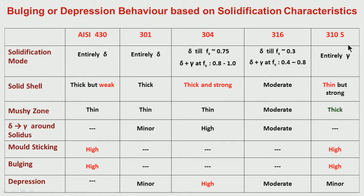For very high nickel equivalent by chromium equivalent, similar to the behavior of very high carbon above 0.5 percent carbon equivalent, solidification is entirely through gamma. Microsegregation is very high, the shell thickness during solidification is quite thin, and the mushy zone is quite deep. Because of that, the sticking and bulging tendency is quite high because the thin solid shell cannot withstand ferrostatic pressure.